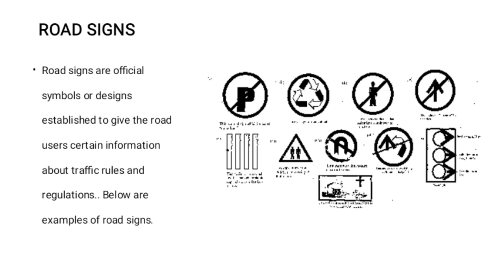Road signs are official symbols or designs established to give road users certain information about traffic rules and regulations. Examples of road signs: 1. A sign which indicates no parking. 2. A sign for roundabout. 3. A sign indicating that pedestrians are prohibited to cross. 4. A sign indicating no entry by vehicles. The zebra crossing sign signifies that vehicles should stop and allow pedestrians to cross.